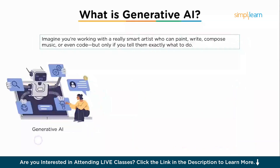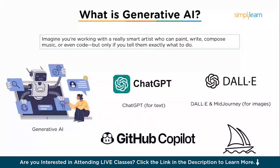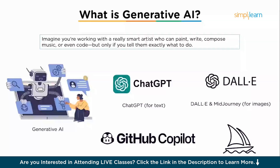Let's look at some popular tools. First, ChatGPT, which is best for text — you're probably already using it. Next, DALL-E and Midjourney, which are great for creating images. And then GitHub Copilot, which is great for coding. You can think of generative AI like a chef who can cook anything you describe, but won't cook anything unless you ask them to.